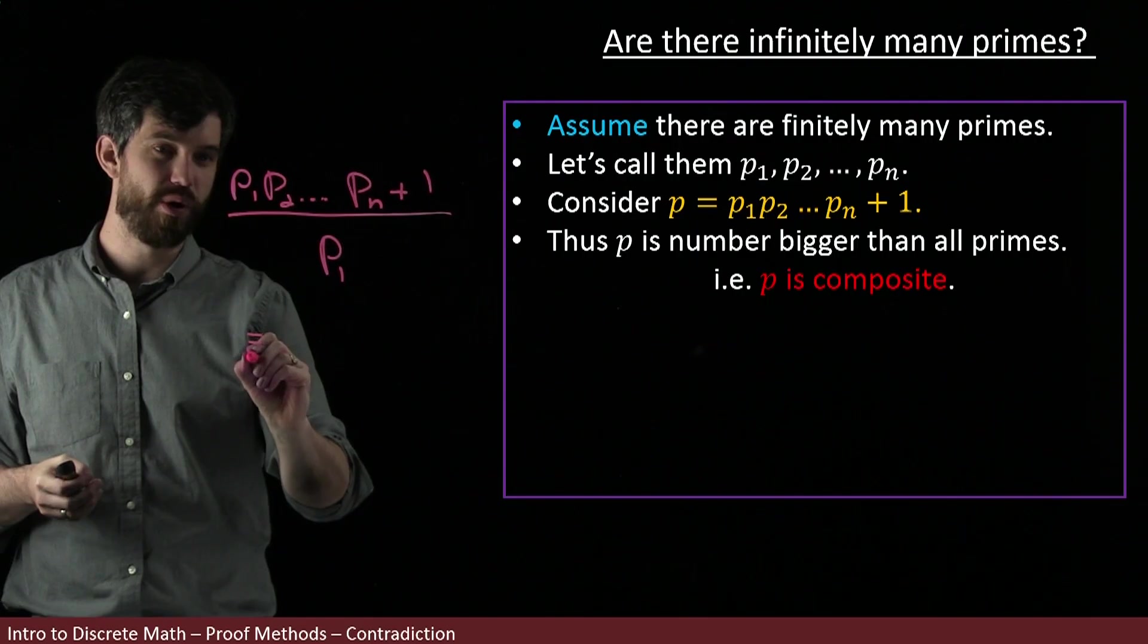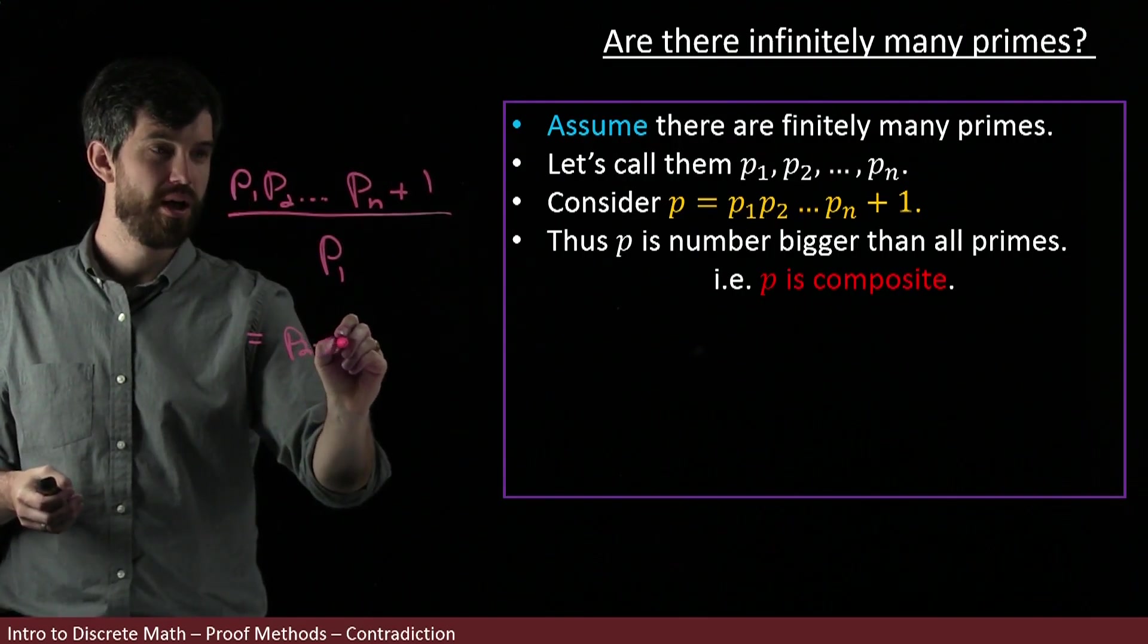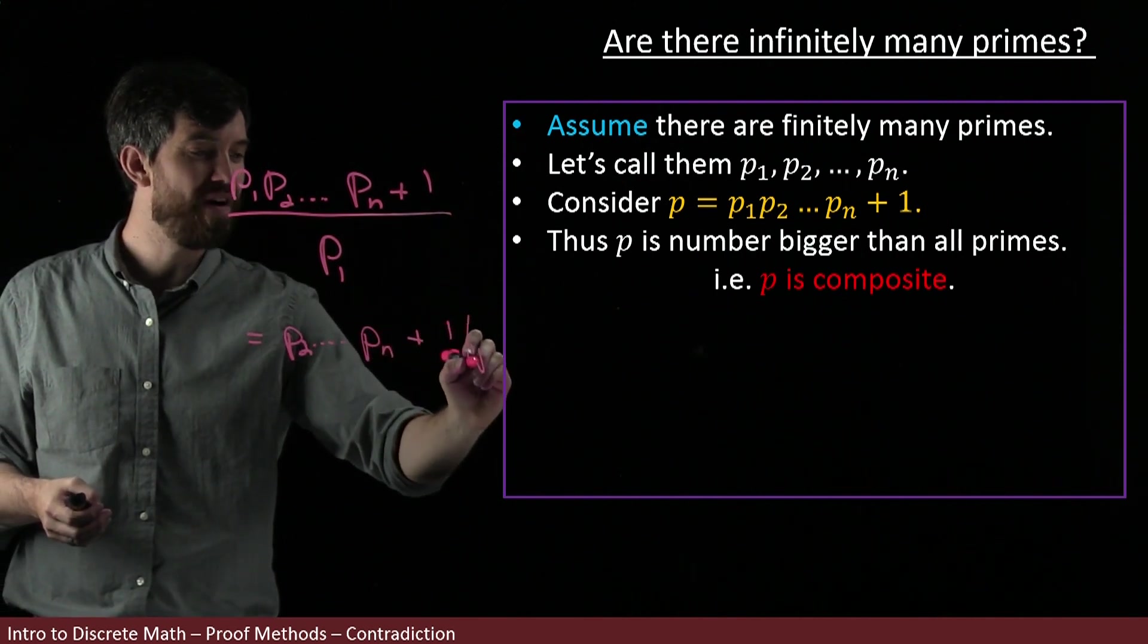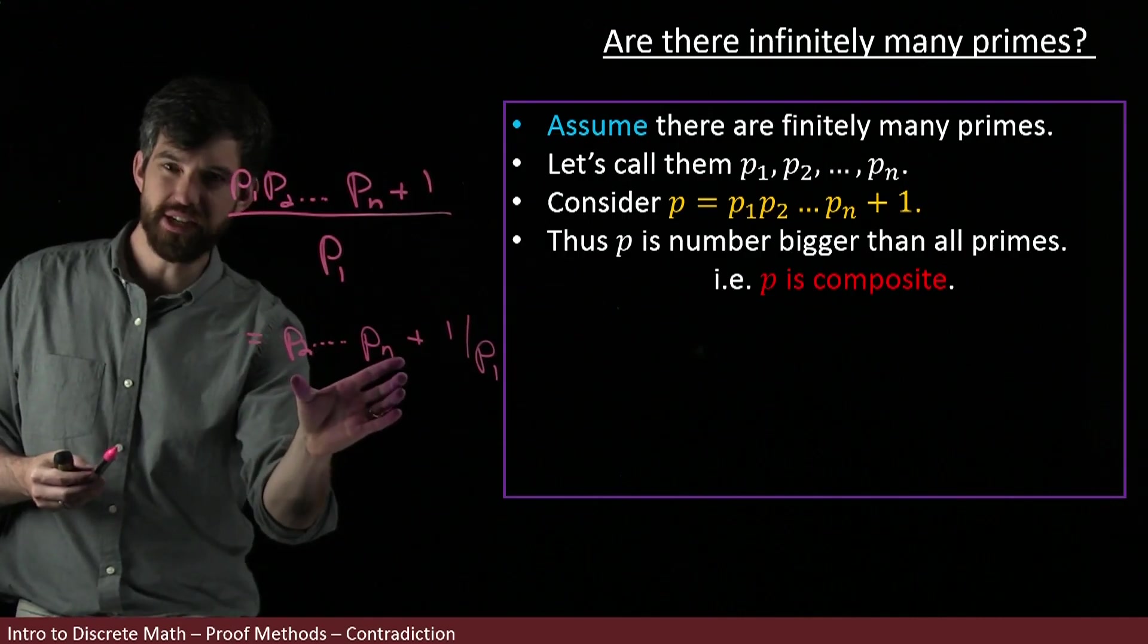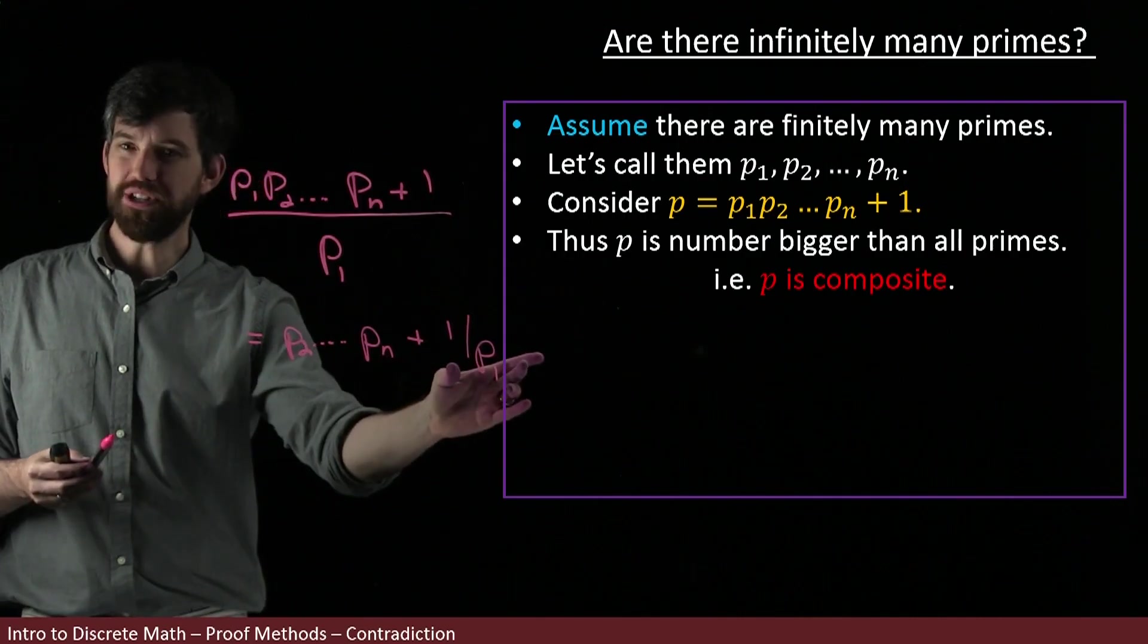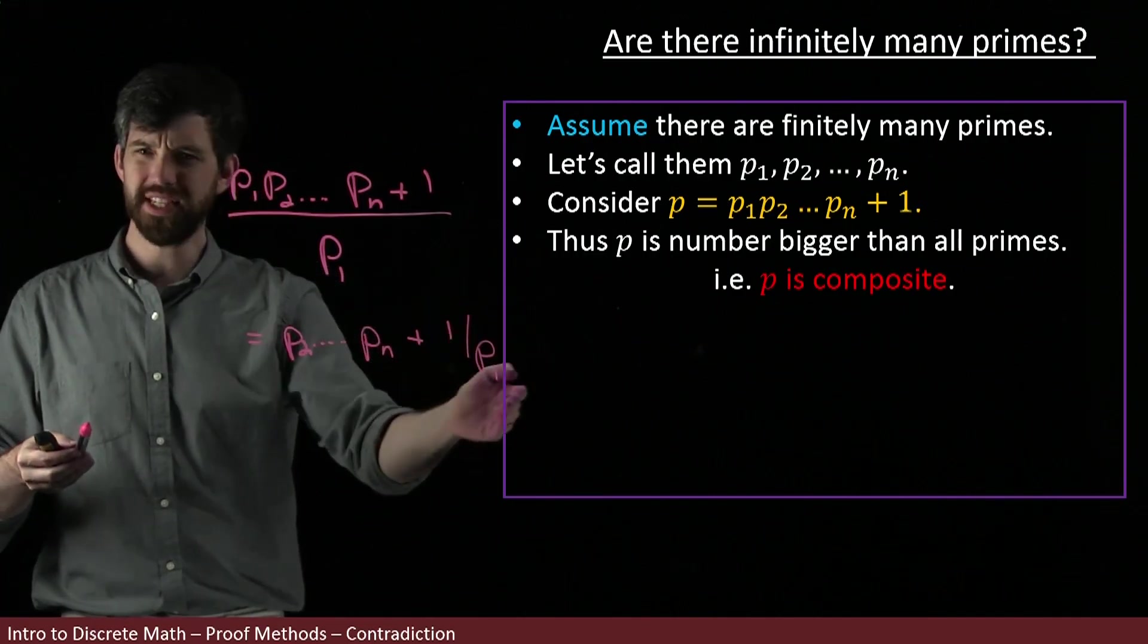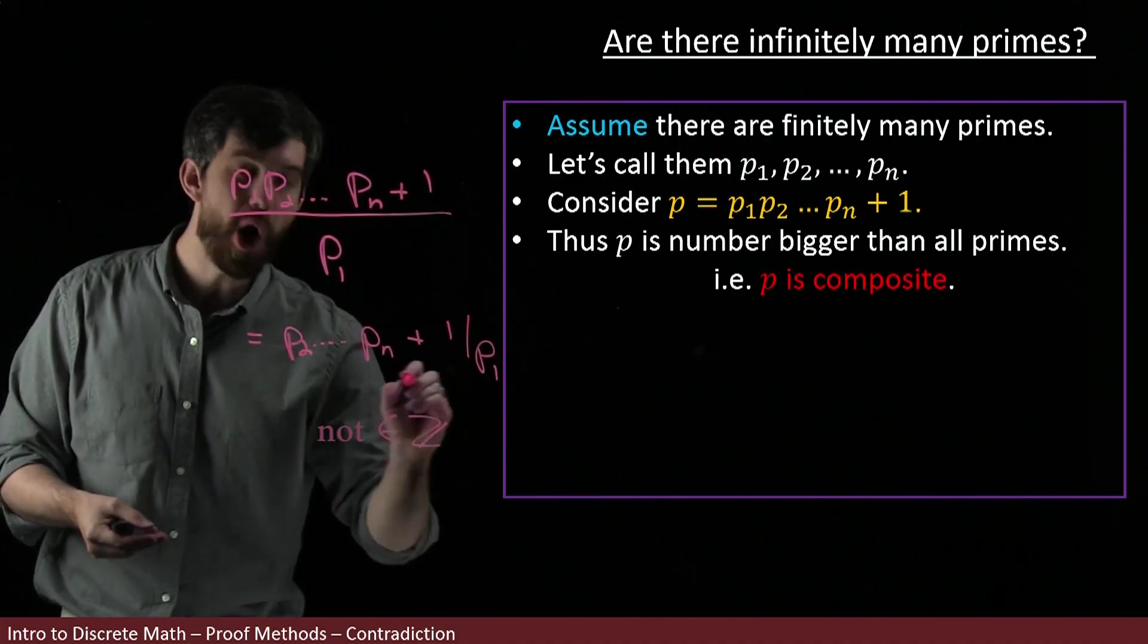How's that going to work out? The p₁ is going to cancel the first thing here, so it's going to be p₂ × ... × pₙ, and then I get a remainder: 1 divided by p₁. This portion is an integer, but this part is not. The p₁ is some positive integer, so what I get out of this is not an integer.